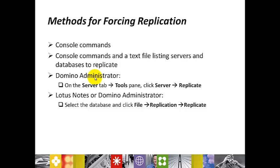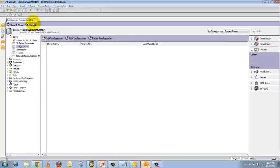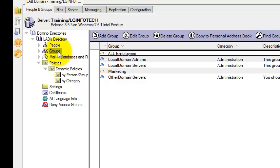Now let me show you how to create a group for the replication. Go to your administrator client, go to People and Groups tab, click on the groups.